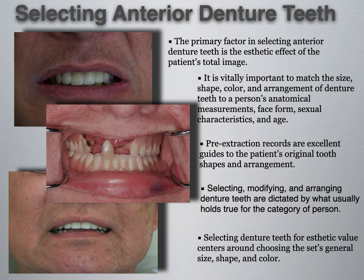Pre-extraction records are excellent guides to the patient's original tooth shapes and arrangement. If a patient still has a canine and central remaining, that single central can serve as a guide for the tooth shape best suited to this patient's face — for example, in an immediate denture case where those teeth will then be extracted and a full denture fabricated. Selecting, modifying, and arranging denture teeth is dictated by what usually holds true for the category of person.